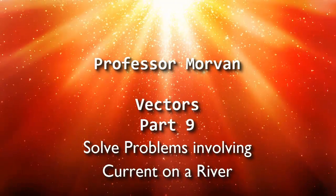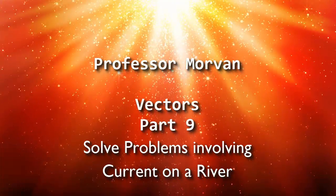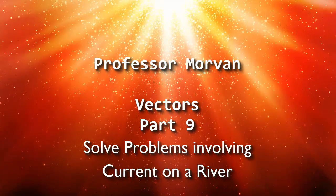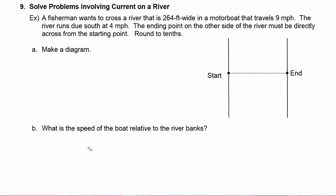In part nine of our lesson on Applications of Vectors, you will learn how to solve problems involving current on a river. In this example, a fisherman wants to cross a river that is 264 feet wide in a motorboat that travels nine miles per hour. The river runs due south at four miles per hour. The ending point on the other side of the river must be directly across from the starting point.